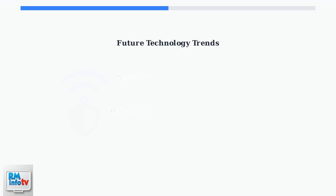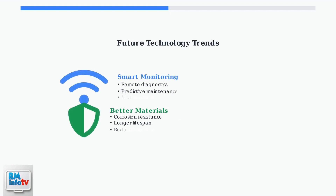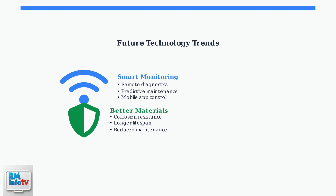Future Navian models may incorporate smart technology for remote monitoring and corrosion-resistant materials for improved reliability. These advances will make maintenance easier and extend equipment life.